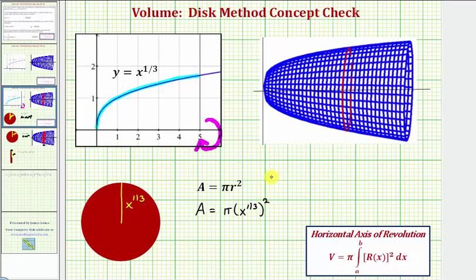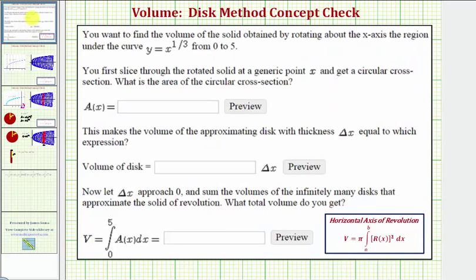Here we have powers to powers, so we multiply the exponents. The area of the circle, or one slice, is pi times x raised to the power of one-third times two, which is two-thirds. So the area of one slice or cross-section is A(x) equals pi times x raised to the power of two-thirds.